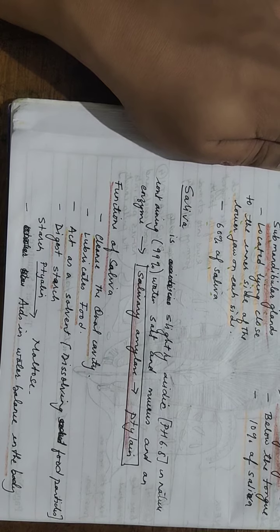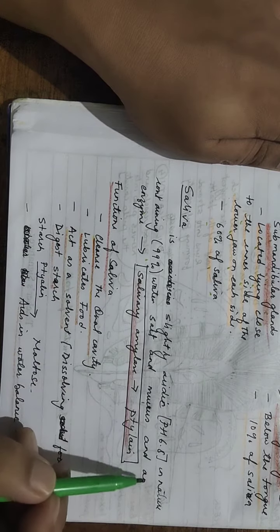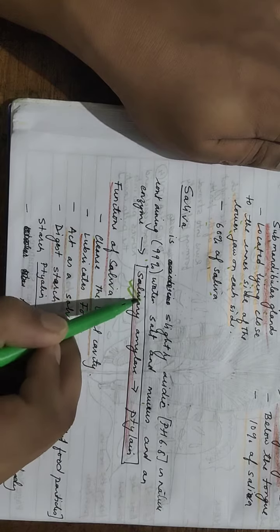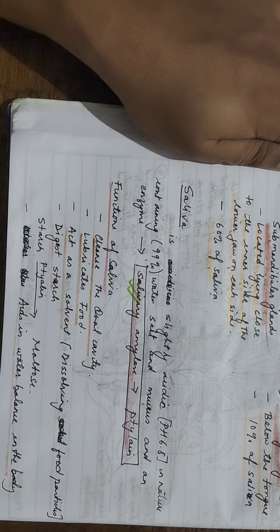Saliva contains 99% of water, salt, and mucus, and a very important enzyme known as salivary amylase, also known as ptyalin.